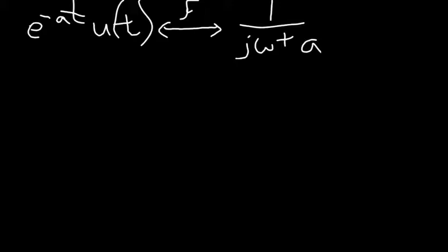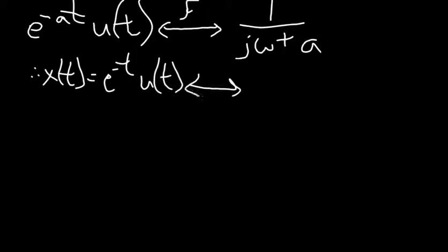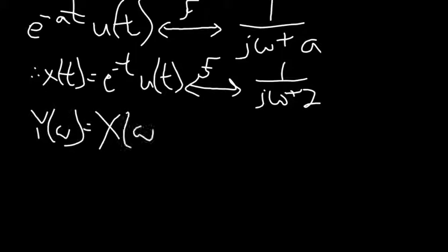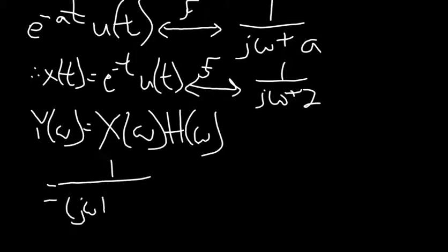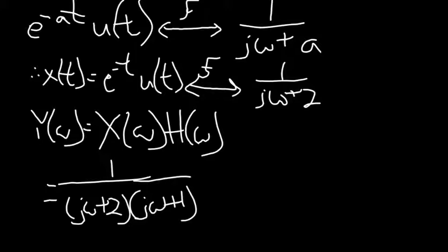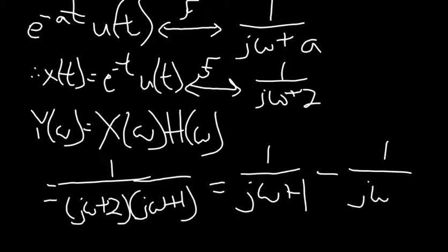Using the property that e^(-at)u(t) Fourier transforms into 1 over (j-omega plus a), and applying that to x(t) equals e^(-t)u(t), the Fourier transform becomes 1 over (j-omega plus 1). Therefore Y(ω) equals X(ω) times H(ω), giving us 1 divided by (j-omega plus 1)(j-omega plus 2), which using partial fractions becomes 1 over (j-omega plus 1) minus 1 over (j-omega plus 2).